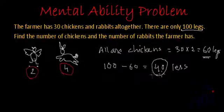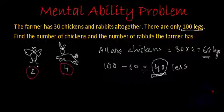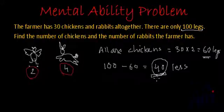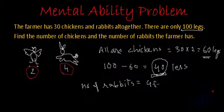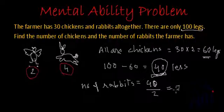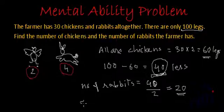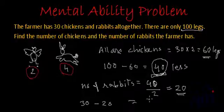These 40 leftover legs we have to give to rabbits, because they need four legs. We have to give two extra legs to each rabbit. So the number of rabbits will be 40 divided by 2, that is 20. And the remaining 30 minus 20 equals 10 — these will be chickens.